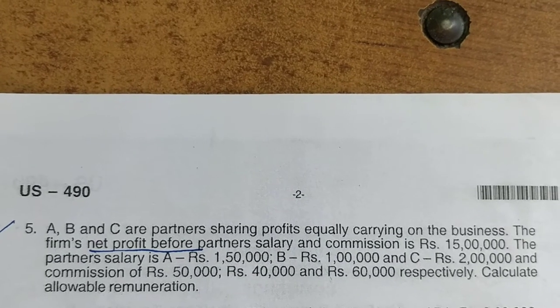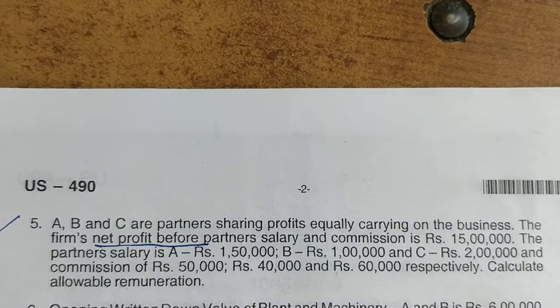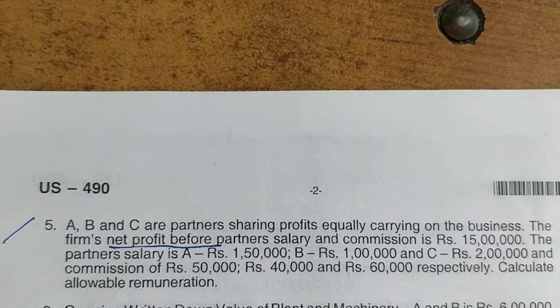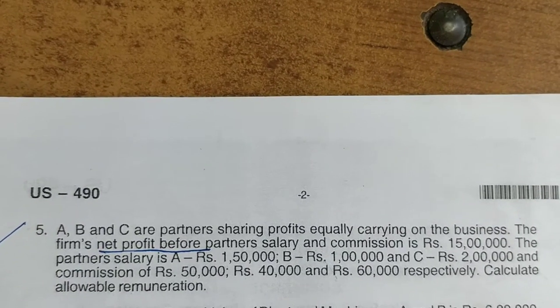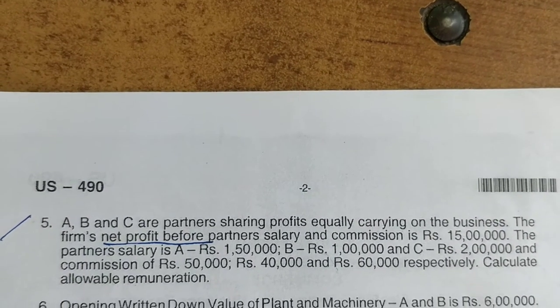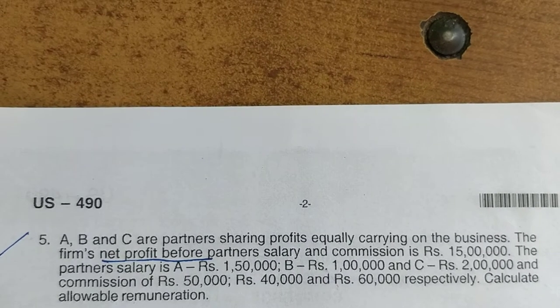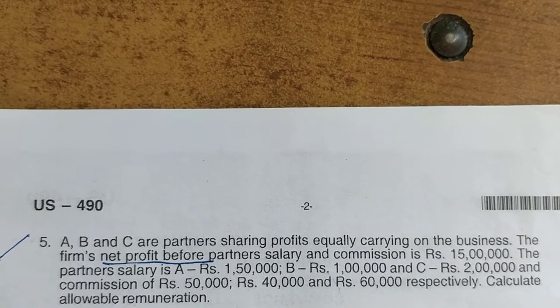2017 question paper. A, B and C are partners sharing profits equally carrying on the business. The firm's net profit before partner's salary and commission is 15 lakhs.